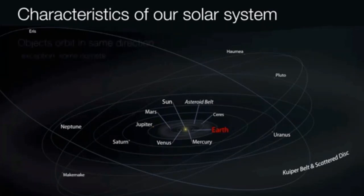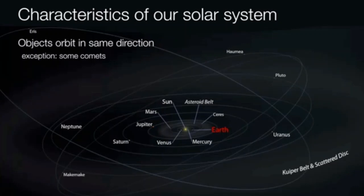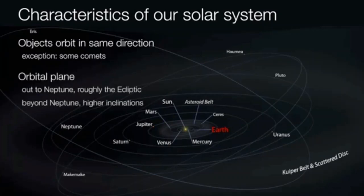For starters, everything orbits the Sun in the same direction. If we are looking at the solar system from overhead, everything would appear to be orbiting the Sun in a counterclockwise rotation. But there are some exceptions to this rule, and that is comets. Sometimes the occasional comet will appear to come in a clockwise direction as seen from overhead.